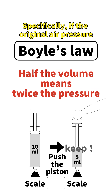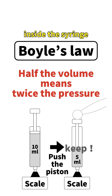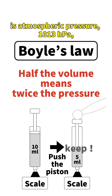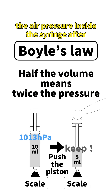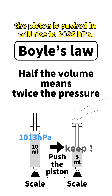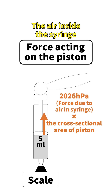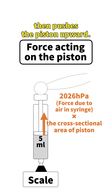Specifically, if the original air pressure inside the syringe is atmospheric pressure, 1013 hectopascals, the air pressure inside the syringe after the piston is pushed in will rise to 2026 hectopascals. The air inside the syringe then pushes the piston upward.